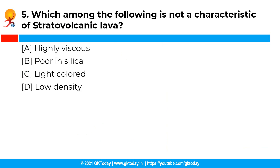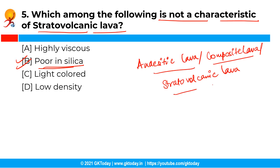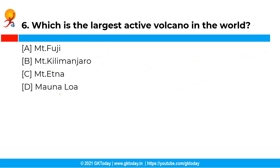The next question is: which among the following is not a characteristic of a strato volcanic lava? The correct answer is option B — poor in silica. Andesitic lava is also called composite lava or strato volcanic lava and is characterized by the following: it has a high percentage of silica, it is highly viscous, it is light colored, and it has a low density. Therefore, 'poor in silica' is not a characteristic of strato volcanic lava.